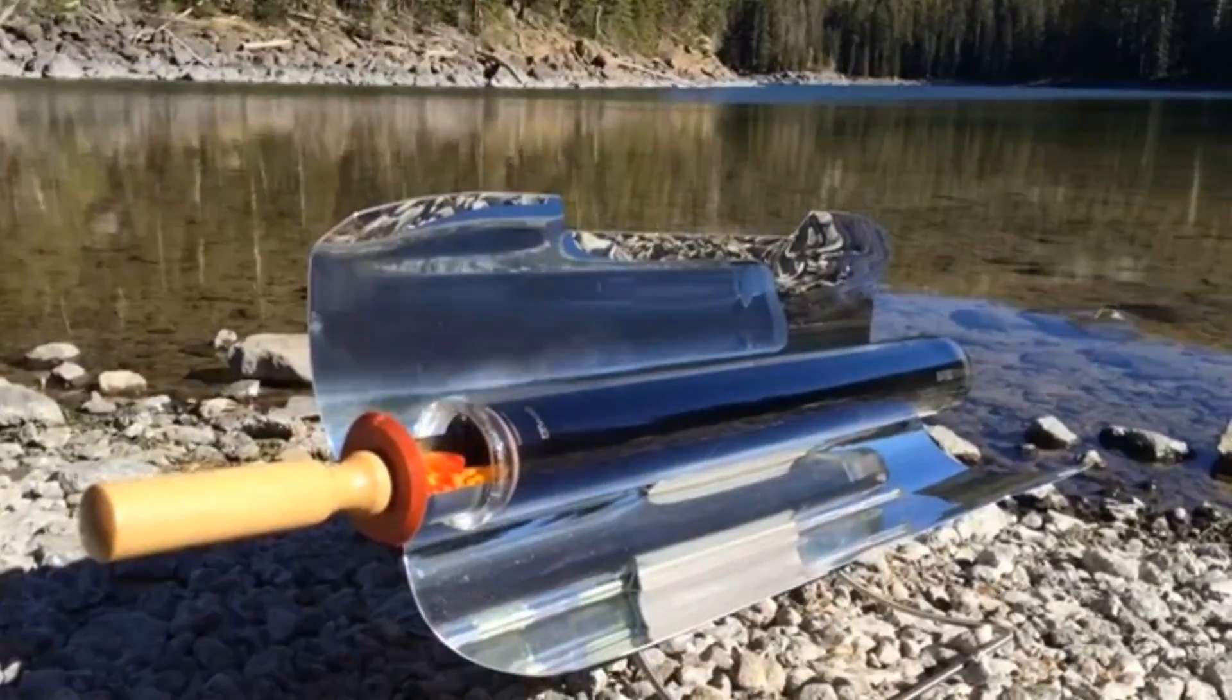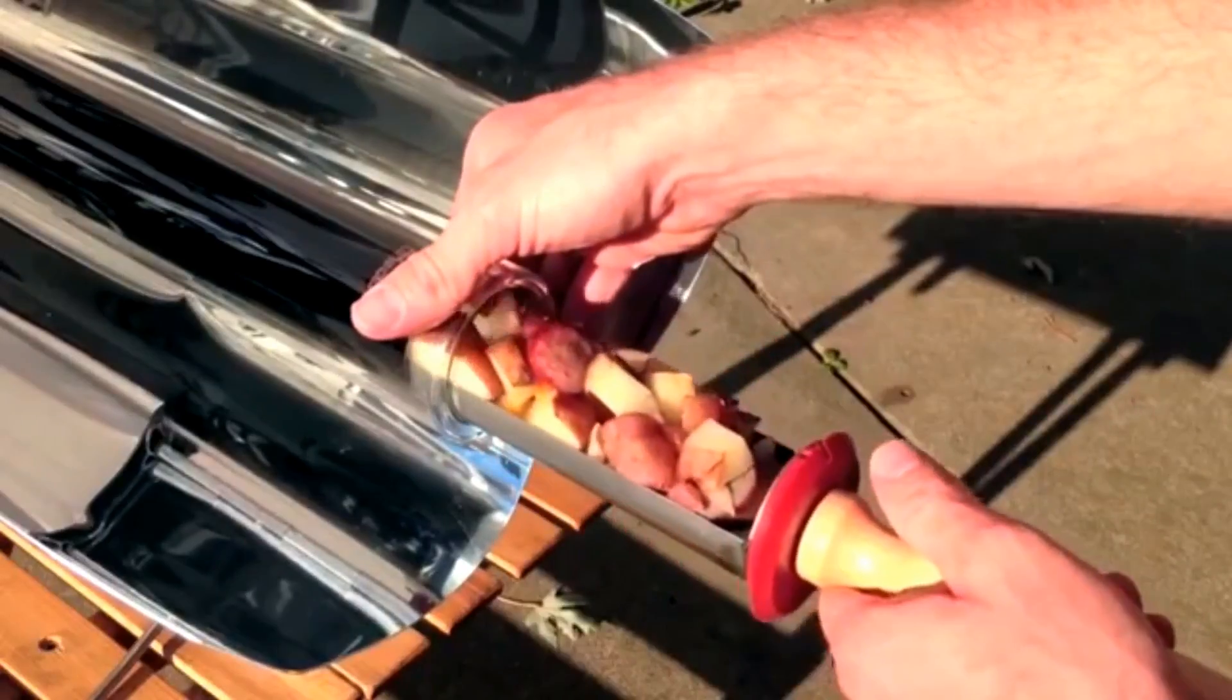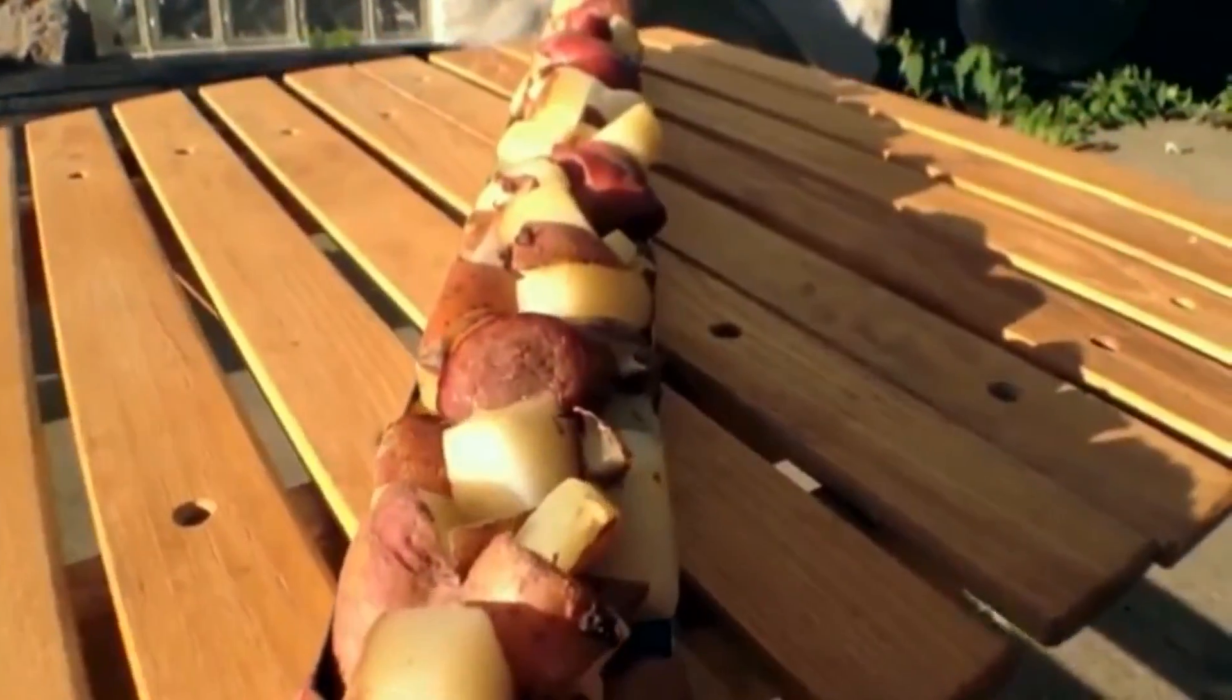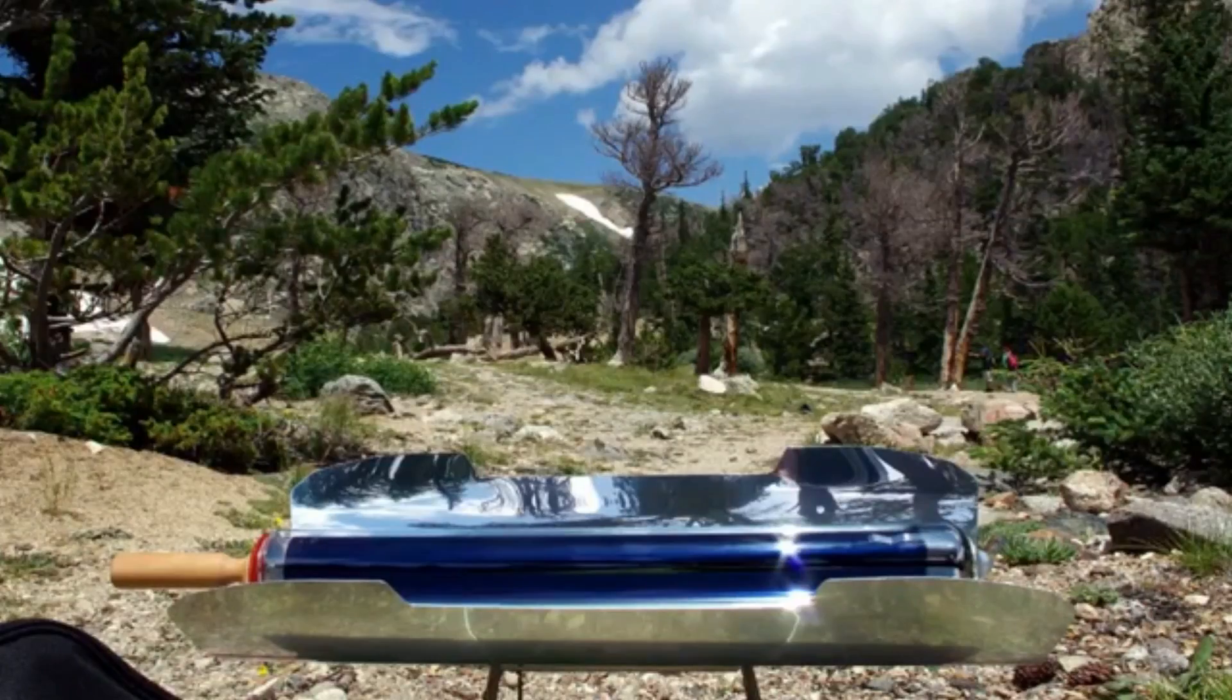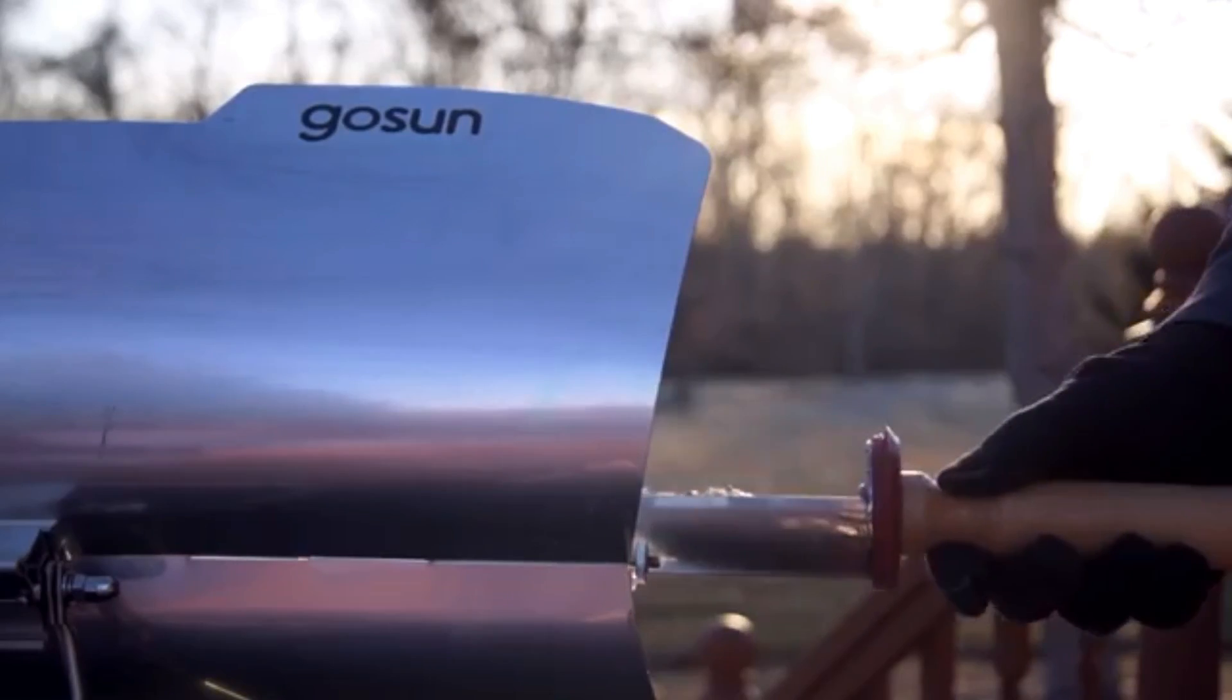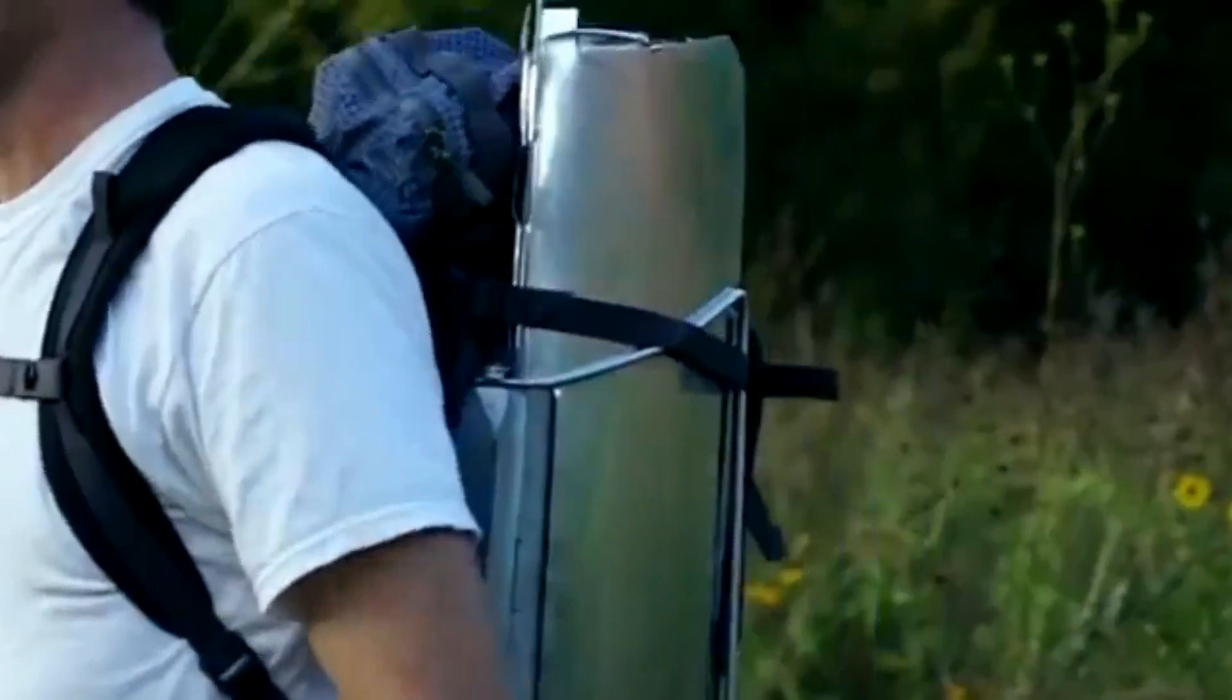This is the GoSun stove, a game-changing solar cooker that can finish a meal in 20 minutes, even under overcast skies. Cooking meals using only the sun, the GoSun goes wherever you do.